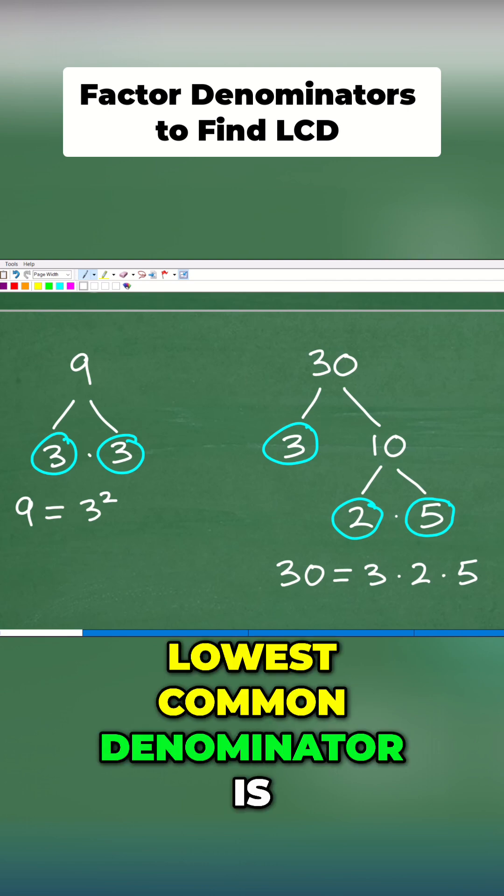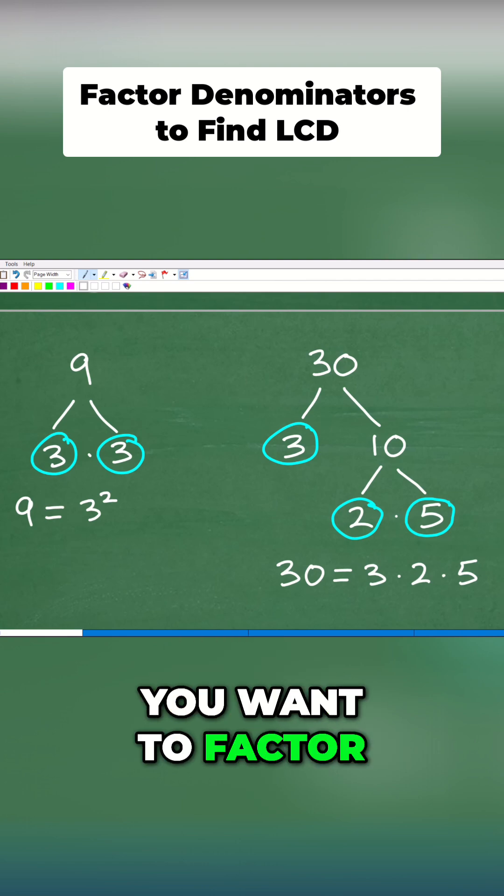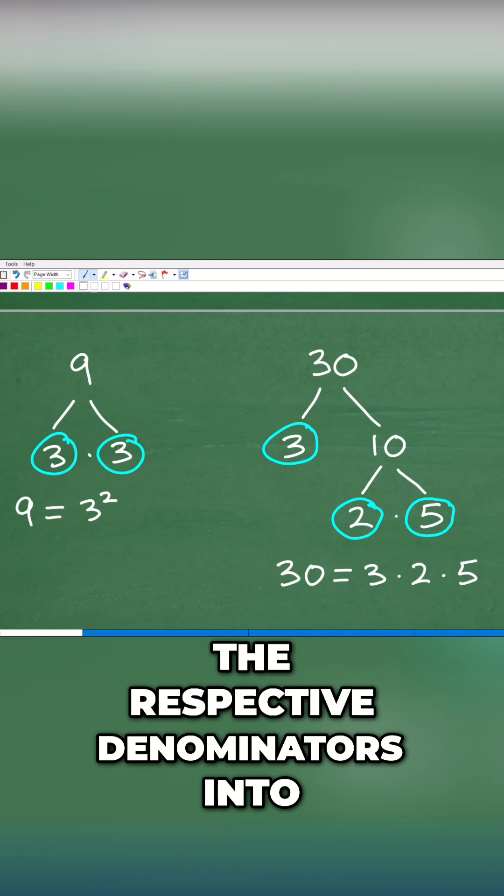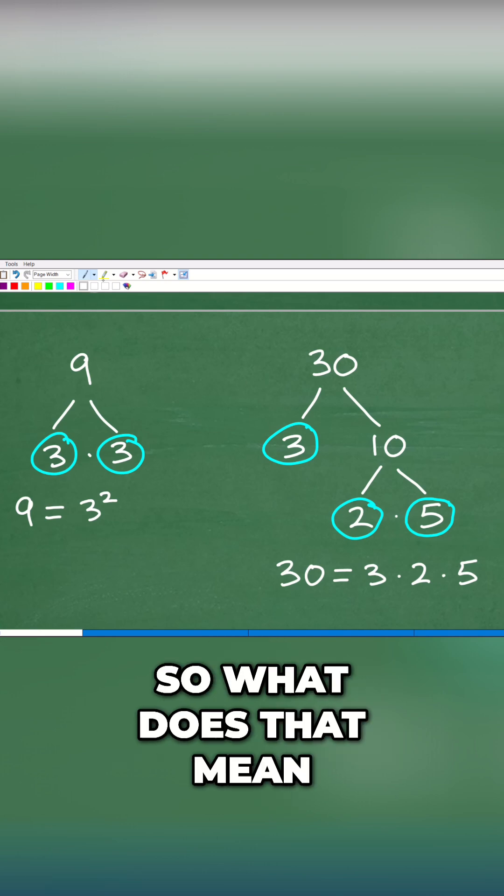What you want to do to find the lowest common denominator is factor the respective denominators into their prime factors. So what does that mean?